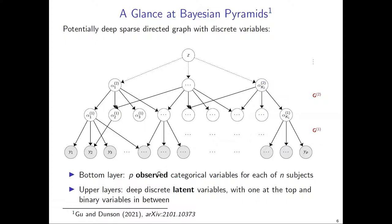Here is a glance at our proposed model, the Bayesian pyramids. This is a class of potentially deep directed graphical models consisting of discrete random variables. The name 'Bayesian' comes from the fact that we consider a directed graphical model — these types of models are also called Bayesian networks in the literature. The name 'pyramid' reflects the specific deep architecture we're considering: a pyramid structure with fewer and fewer latent variables when going deeper. This is not arbitrarily designed but is motivated by our identifiability and interpretability considerations.